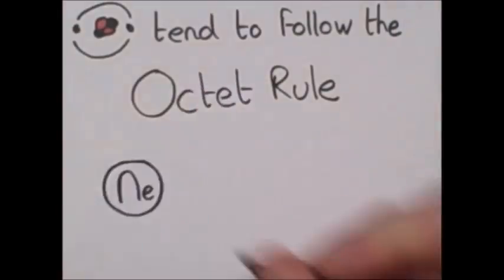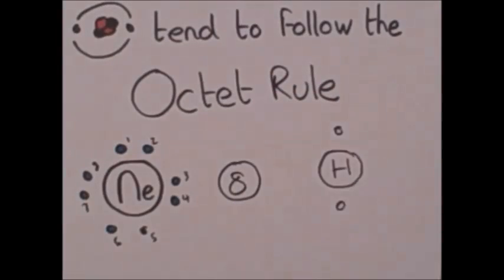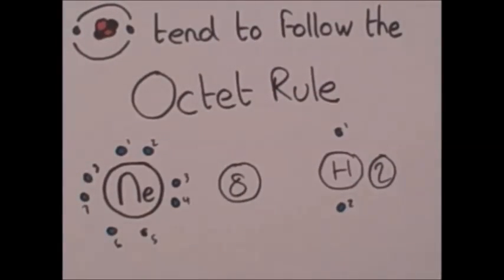The atoms in a Lewis structure tend to follow the octet rule. This states that an atom in a molecule will be stable when there are eight electrons in its outer shell, with the exception of hydrogen, which only needs two.